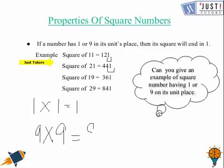Since they both have 1 at the unit place, the square of them also have 1 at the unit place. So this is property 1.